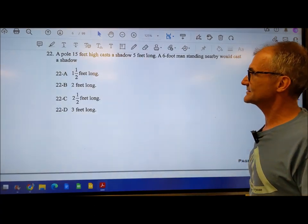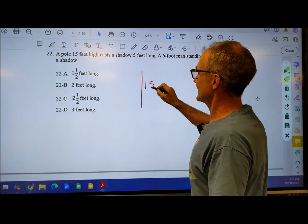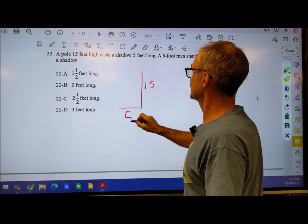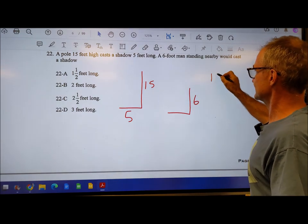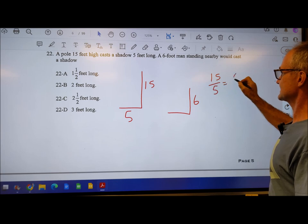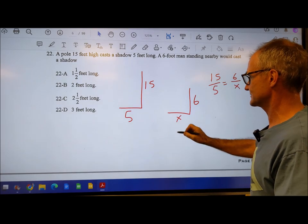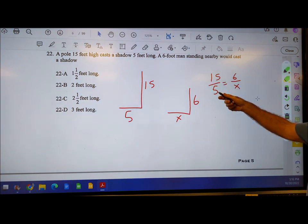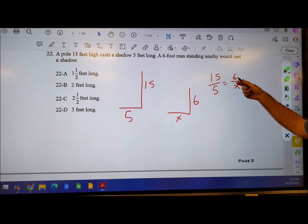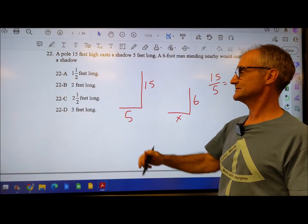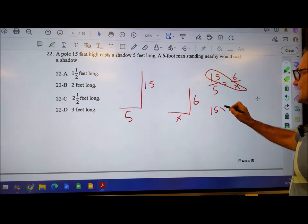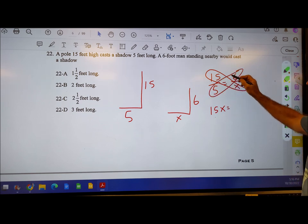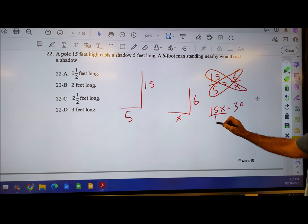Number 22, another ratio problem. A pole 15 feet high casts a shadow 5 feet long. A six foot man standing nearby would cast how much of a shadow? We know 15 is to 5 as 6 is to what? I can see 15 divided by 5 is 3. 6 divided by what is 3? It's going to be 2. Or cross multiply: 15 times x equals 6 times 5, 30. Divide both sides by 15, x equals 2. The correct answer is 2 feet.